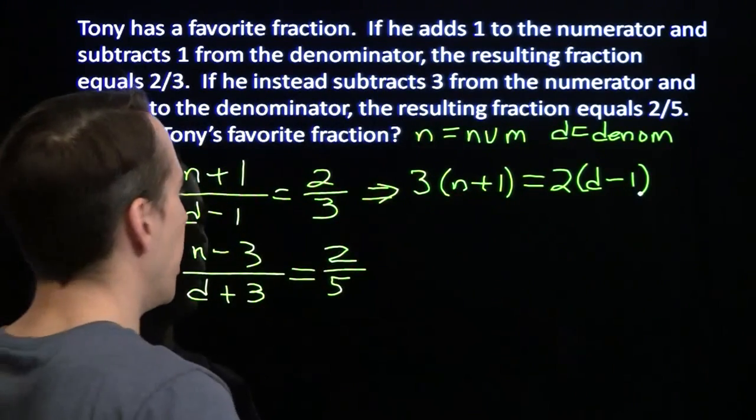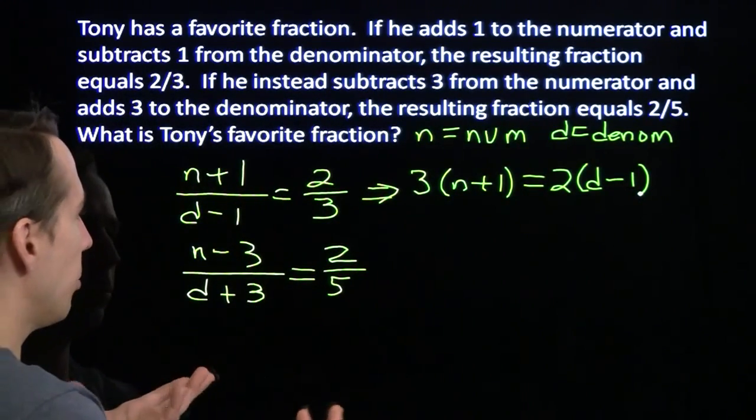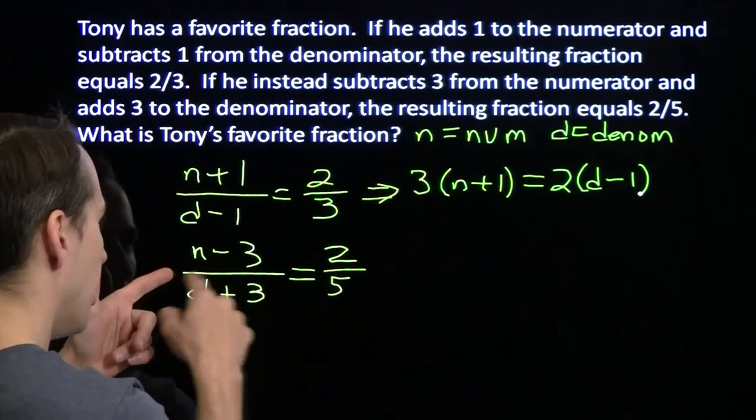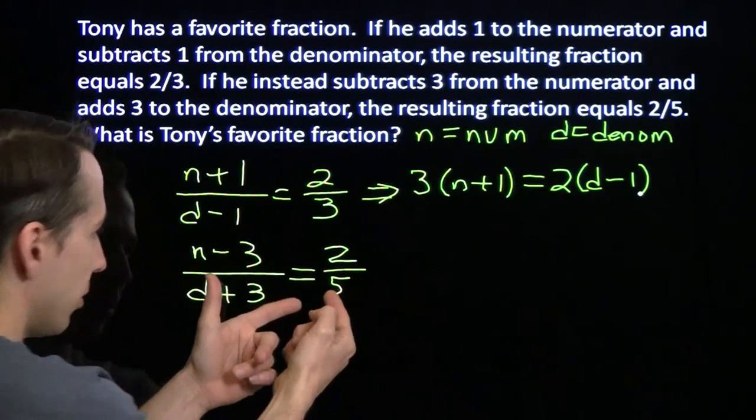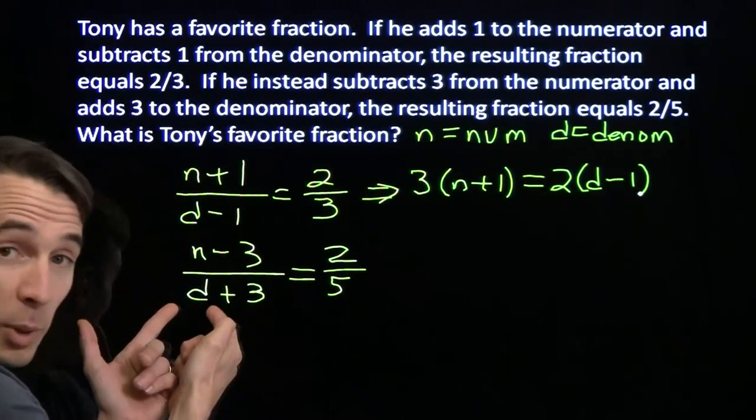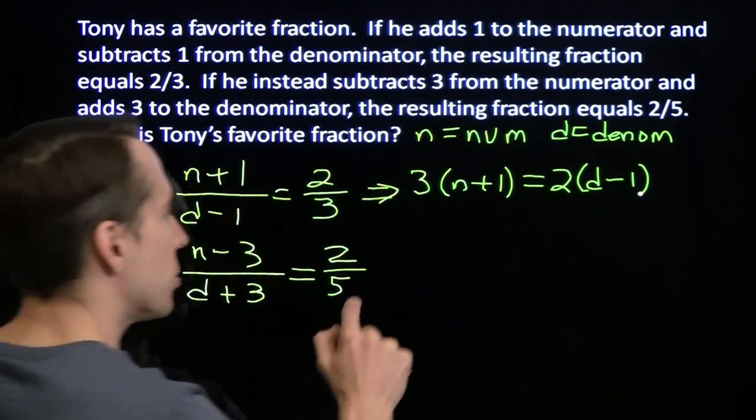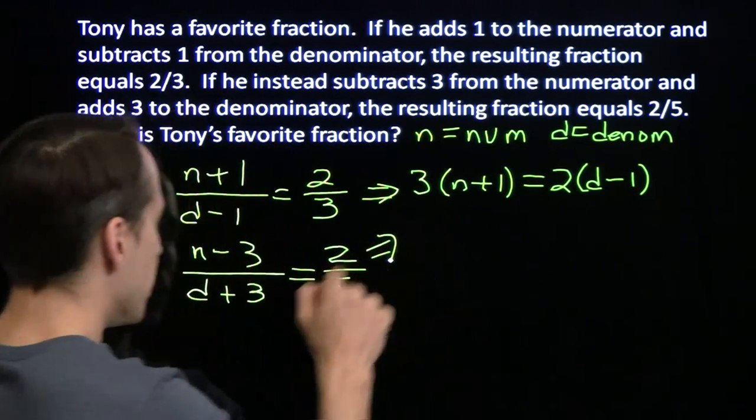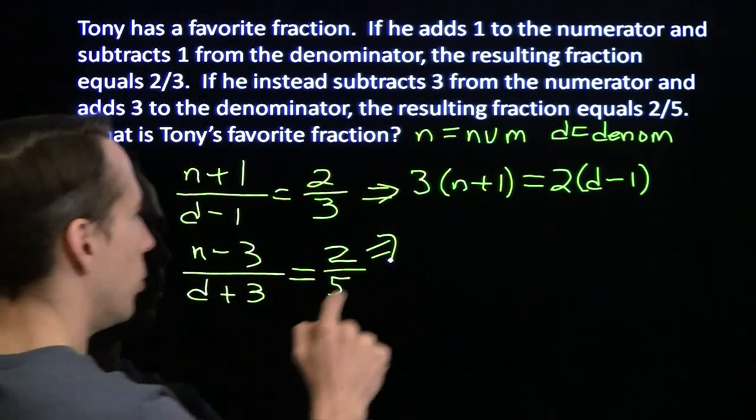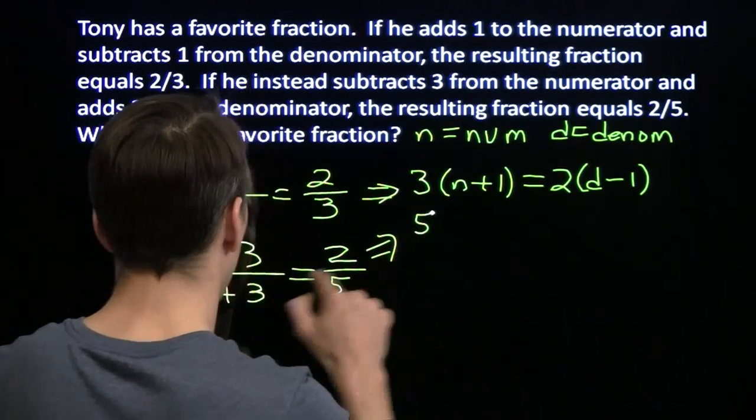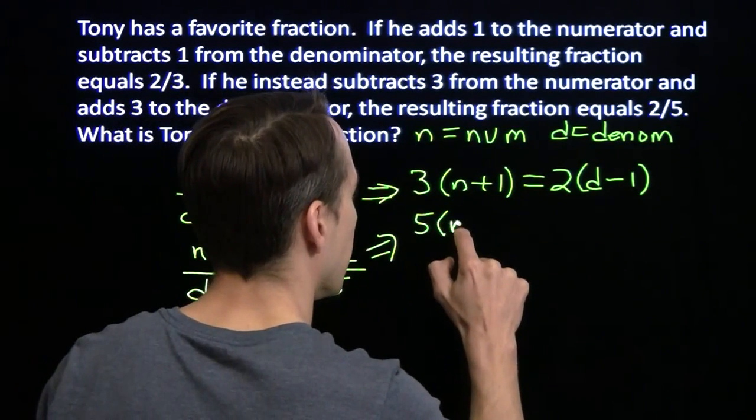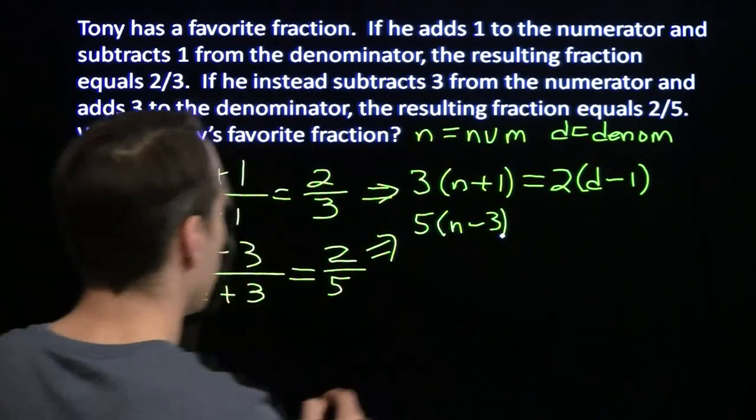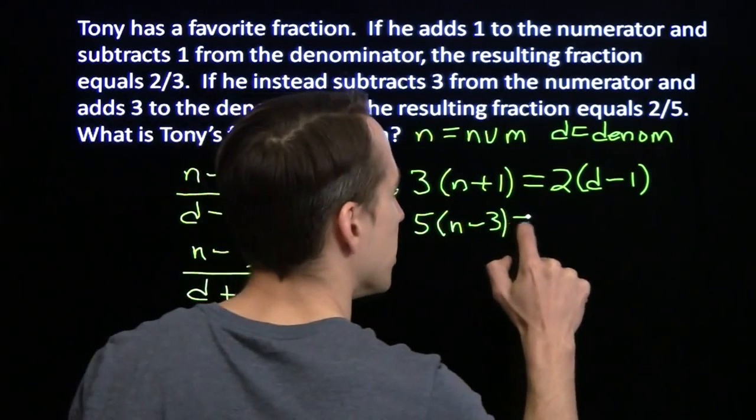That'll cancel the d minus 1 over here. That'll cancel the 3 over there. And we'll get 3 times n plus 1 equals 2 times d minus 1. Alright. That's better. Down here, we're going to do the same thing. Same thing, we're going to take both sides. Multiply them both by 5. That'll get rid of this. Multiply both sides by d plus 3. That'll knock out the d plus 3 over here. And I'm going to put this up here.